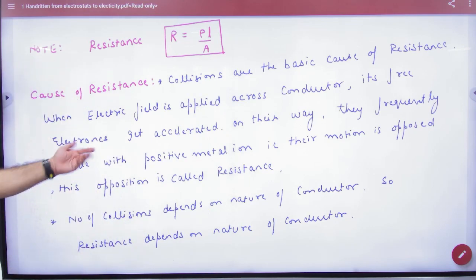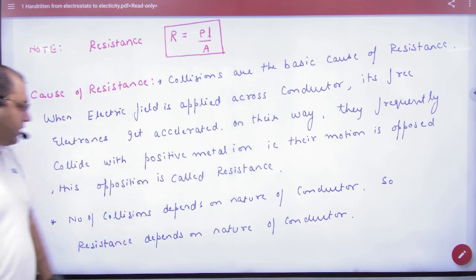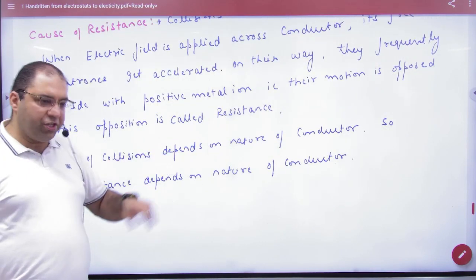When they get stuck, there are collisions, and this is the cause of resistance. The number of collisions depends on the nature of the conductor.